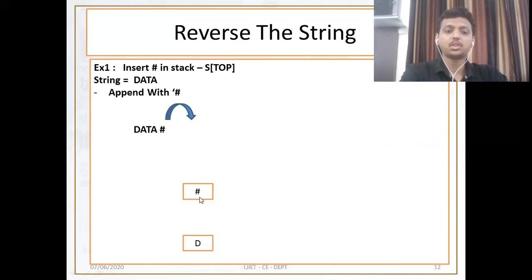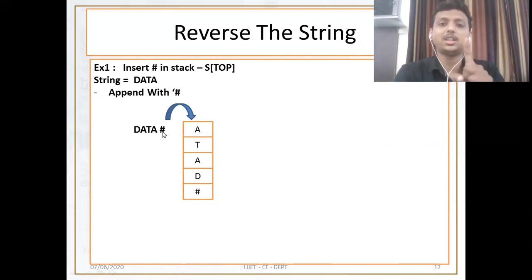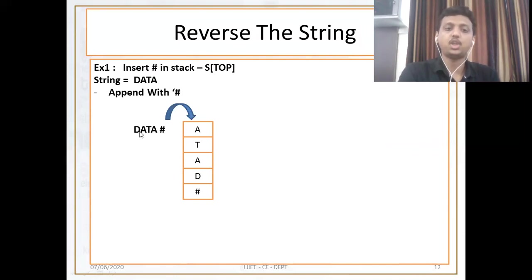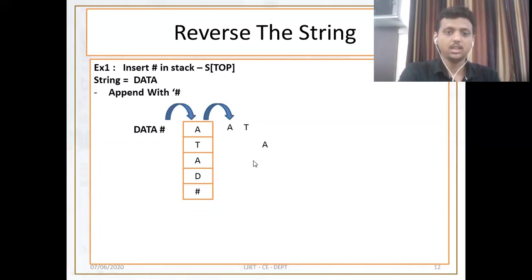Now just insert the data: push d, push a, push t, push a. Now what you get? Hash. So do push operation until and unless you get hash in the next pointer. Next points to d, then a, then t, then a, then hash — then stop. Now just pop out each element: a, t, a, d. This is how we can reverse the string using a stack.